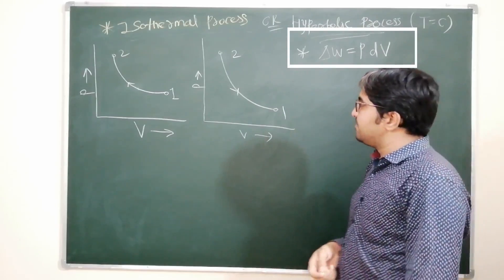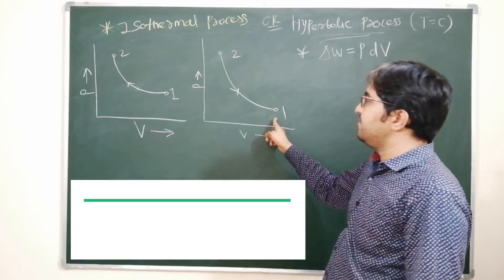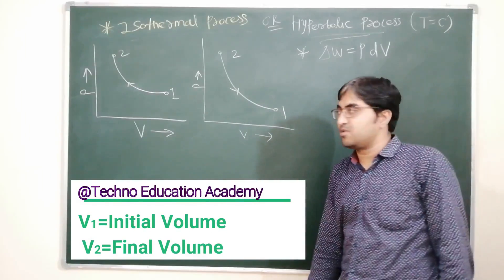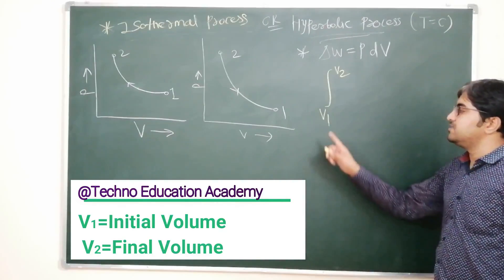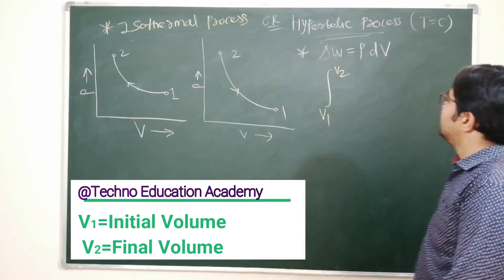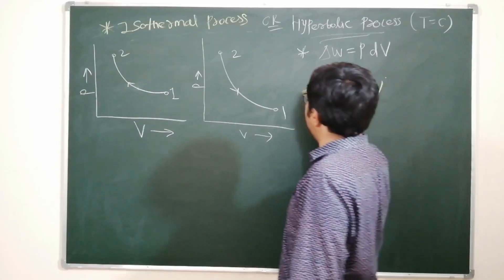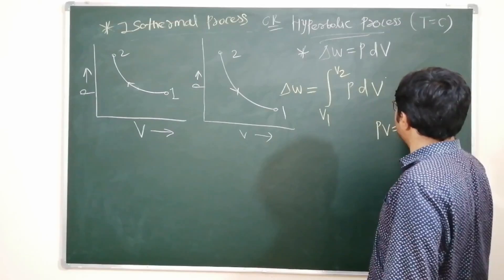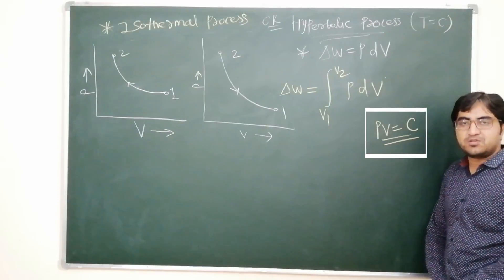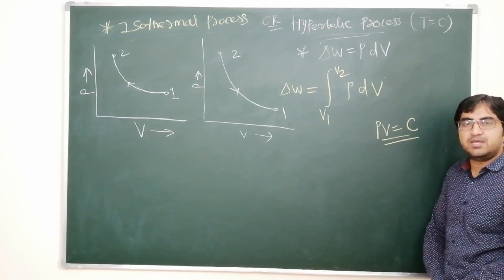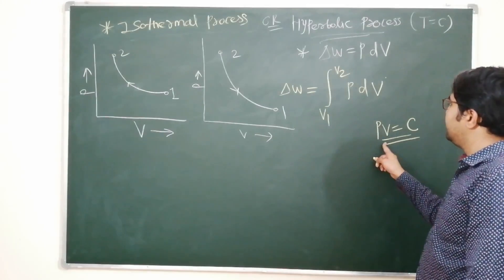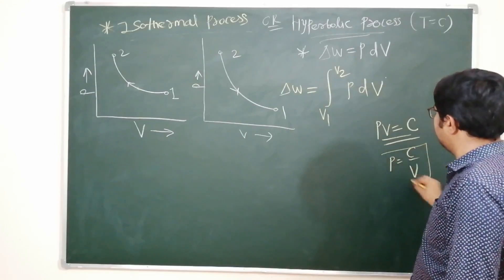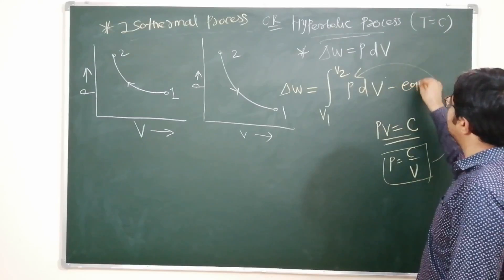For the isothermal process, we consider the initial point P1, V1, T1 and the final point P2, V2, T2. We take the integration limits from V1 to V2 for the 1-to-2 process. So work done equals the integral from V1 to V2 of P dV. We know that in the isothermal process, PV equals constant, so P equals C divided by V. We substitute this value of P into the work done equation.